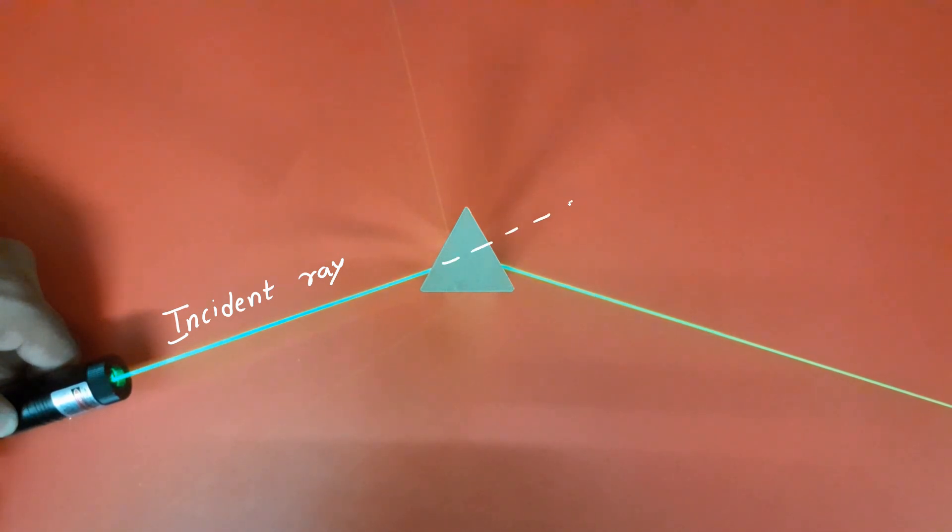We extend the incident ray with the dotted lines. Also extend the emergent ray backward with dotted lines. The two extended lines meet at a point. The angle between these two lines, that is direction of incident beam and direction of emergent beam, is known as angle of deviation.